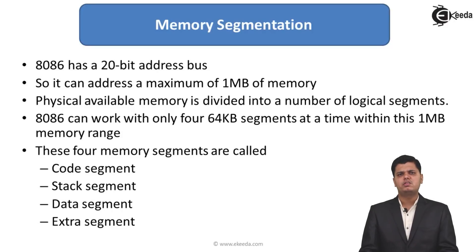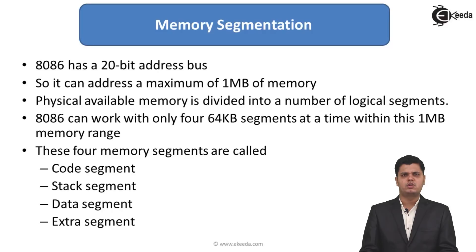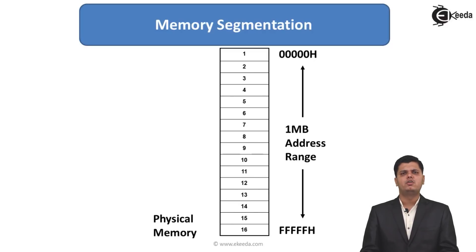The four segments are: code segment, stack segment, data segment, and extra segment. These are the logical names of the segments which are defined to organize memory in the 8086 microprocessor.